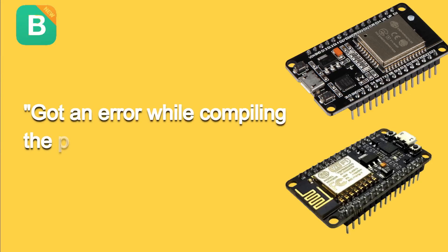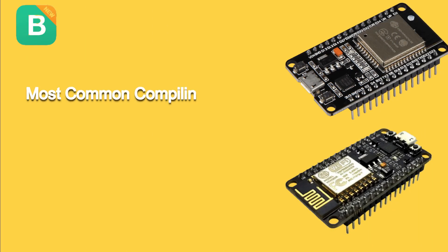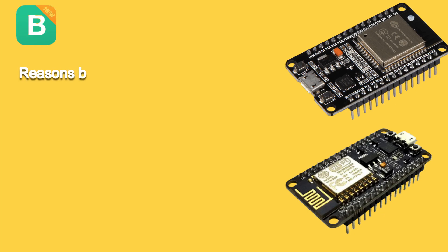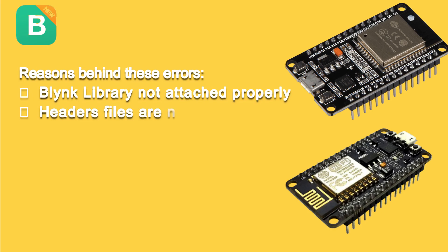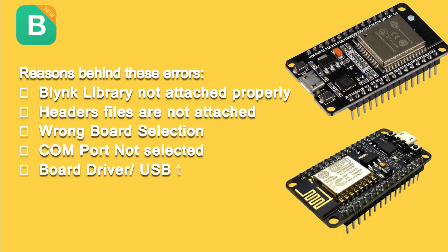The first and most common problem is getting an error while compiling the code in Arduino IDE. Common errors include Blynk.h or Preferences.h header files not found, etc. This can be due to a Blynk library error, header files not attached with the program, wrong board selection, or an uploading problem due to not selecting the proper port for your Wi-Fi board, or not installing the USB to TTL driver on your computer.